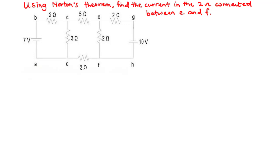It is sometimes difficult to find the value of current flowing through a given resistor using Norton's theorem, especially if the circuit contains more than one source.